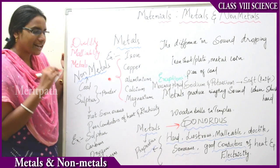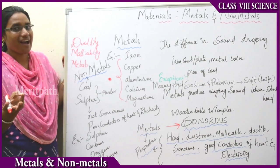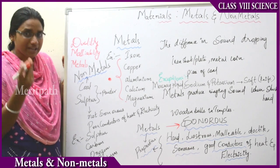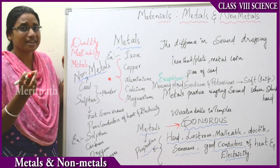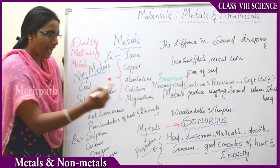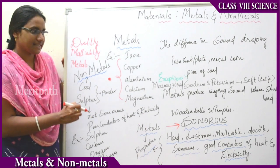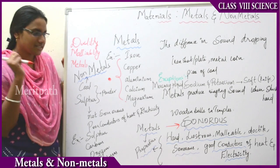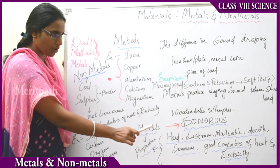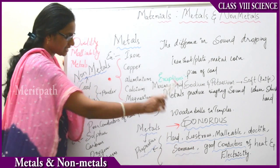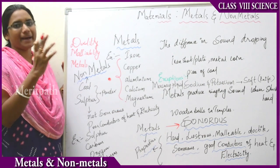The characteristics and properties held by metals are: majorly, metals are very hard, they are good conductors of electricity, good conductors of heat, and they are lustrous, malleable, ductile, and sonorous. All these properties are held by metals.